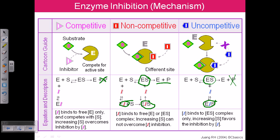So the inhibitor binds to the enzyme-substrate complex only, and increasing substrate actually favors the inhibition by this kind of inhibitor. In competitive inhibition, increased substrate overcomes the inhibition. In non-competitive inhibition, increasing substrate cannot overcome the inhibition. In uncompetitive inhibition, addition of more substrate favors the inhibition by the inhibitor.